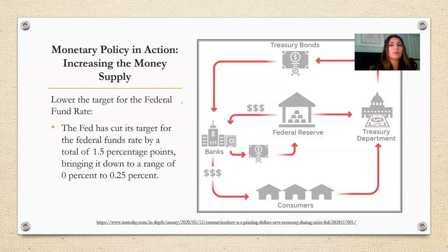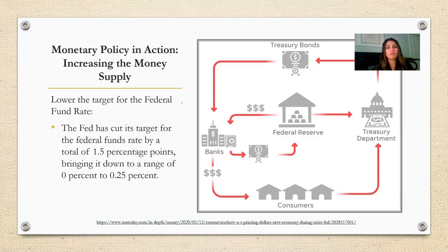The Federal Reserve achieves lower interest rates by increasing the money supply in the economy. If there is a large amount of money circulating in the system, people don't have to compete as hard for the money, which in turn reduces interest rates. Knowing this principle, when the Federal Reserve wants to lower interest rates, it simply injects more money into the system. In response to COVID-19, the Fed immediately cut its target for interest rates by a total of 1.5 percentage points, bringing it down to a range of 0% to 0.25%.